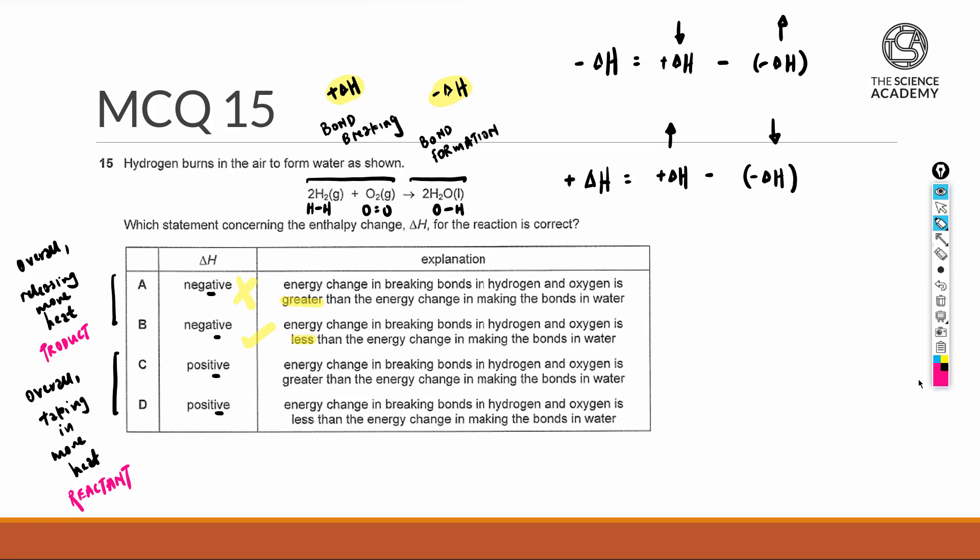So C, we're talking about positive. If it's positive, we actually want to take in more heat to break the reactants. Energy change in breaking bonds in hydrogen and oxygen is greater than energy change in making the bonds in water. So this also seems to be likable.